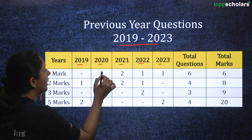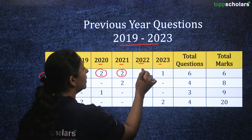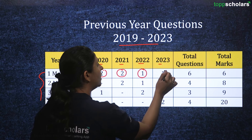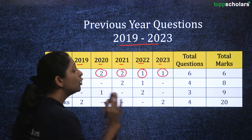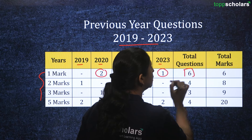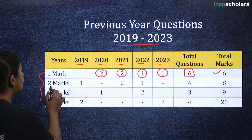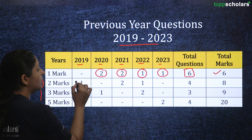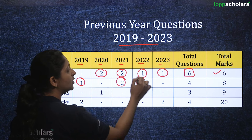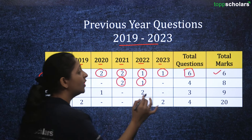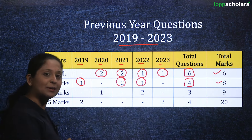For one mark, you have two questions in 2022, one in 2021, one more in 2022 and one in 2023 — giving you six total questions and six marks for the topic. Similarly for two mark questions, you have one in 2019, two in 2021 and one in 2022, giving you four questions and eight marks total.